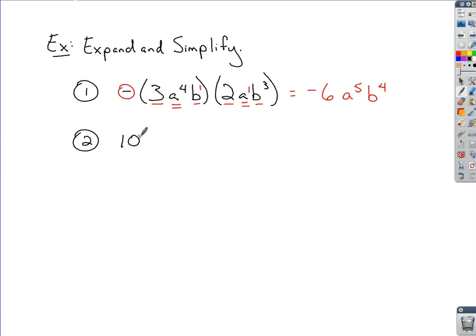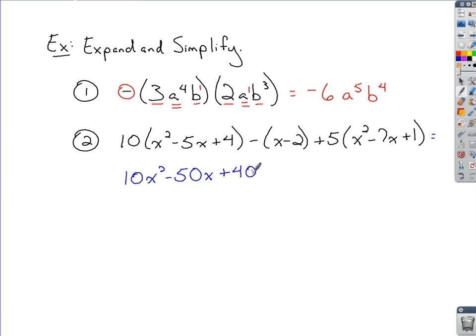One where we've got a combination of all those. If I take 10 times a quantity of x squared minus 5x plus 4, I'm going to subtract from that a quantity of x minus 2. I'm going to add to that 5 times a quantity of x squared minus 7x plus 1. So you've been taught when you're simplifying and you've got parentheses involved, you want to do some distributing.